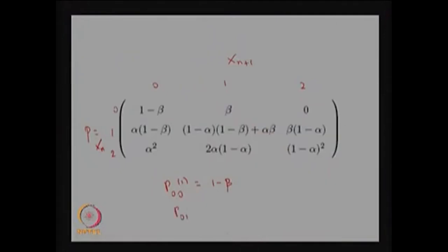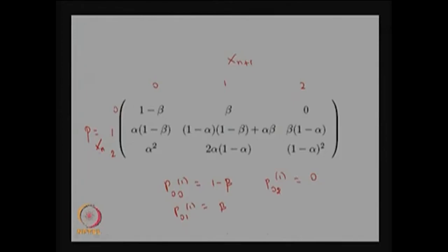P(0,1) is the probability of going from 0 to 1 working machine in one step — this happens because the crew finishes one repair, and that probability is beta. Since the crew can only complete one repair per day, going from 0 to 2 in one step is not possible, so P(0,2) equals 0.